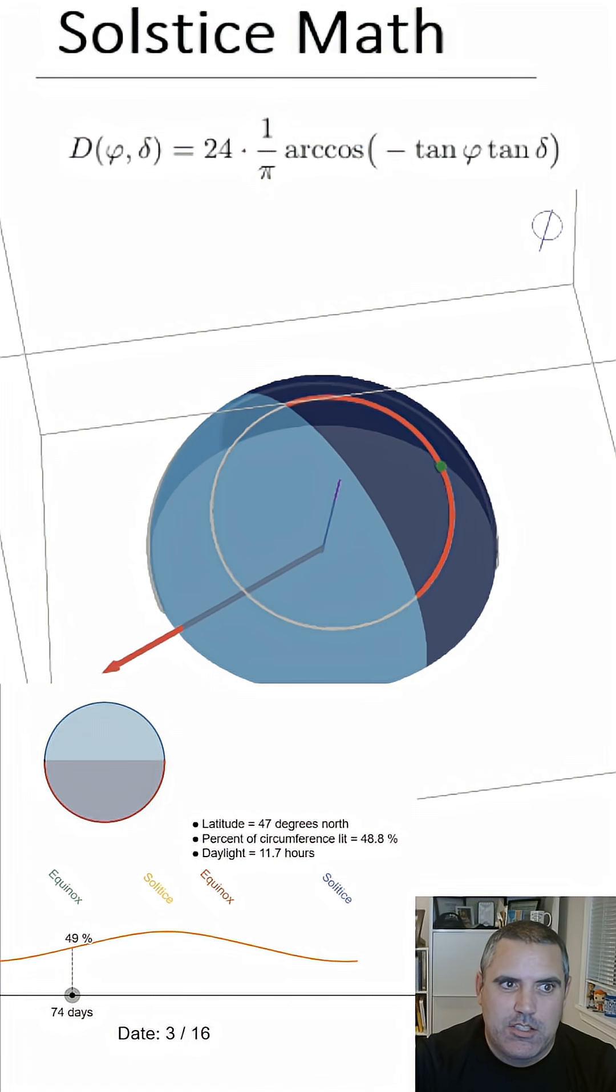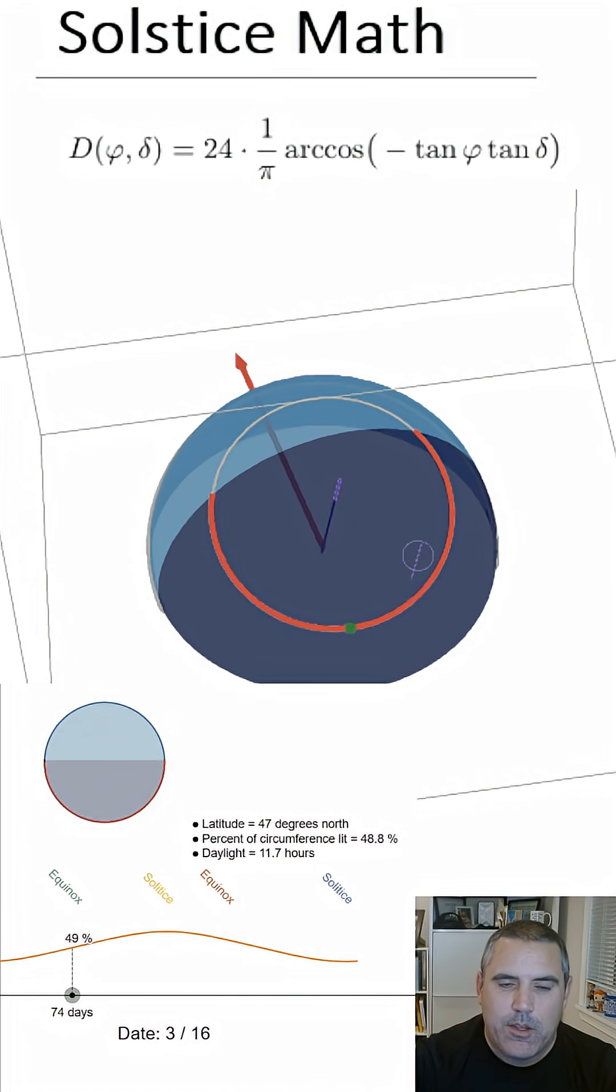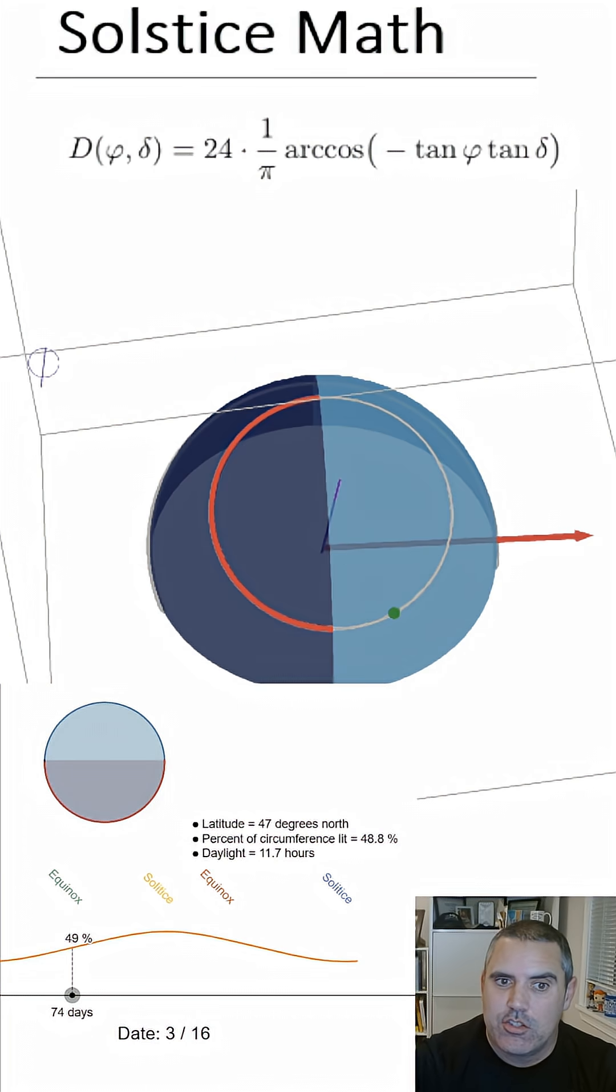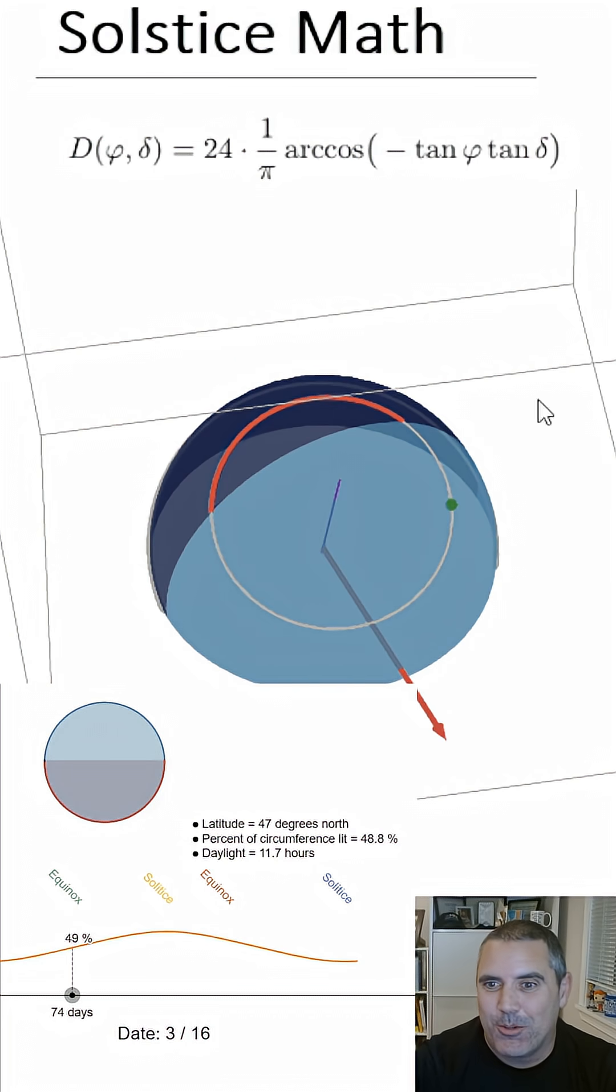You can see throughout the year it changes. So here's about where the equinox was. Then it changes. You get a lot more light. I had never realized that's all it was. There's even a formula for it.